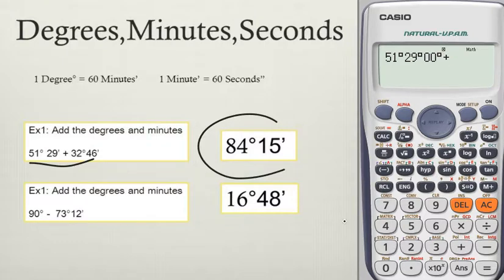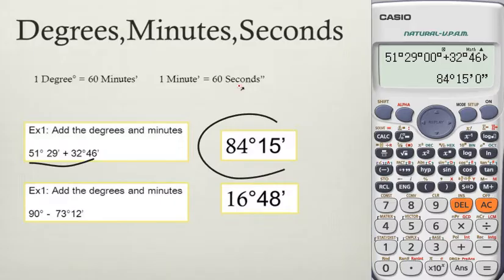There are no seconds here, and then you are adding them on 32 degrees. 32 degrees, that button again, and minutes it's 46 minutes. And here again there are no seconds, zero seconds. And you get the answer to be 84 and 15, which is exactly the same as the one that is there.